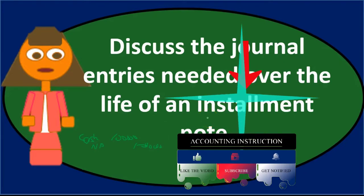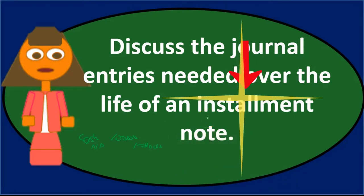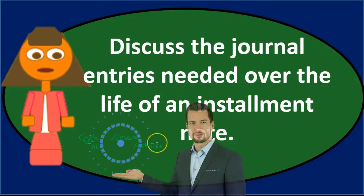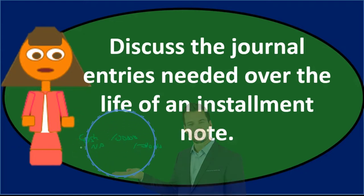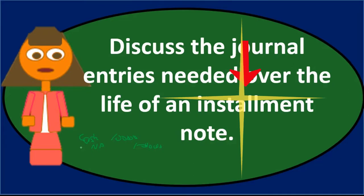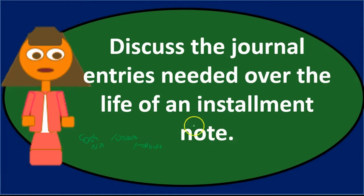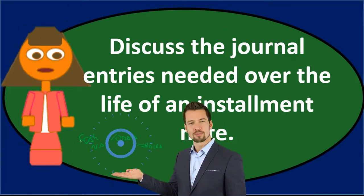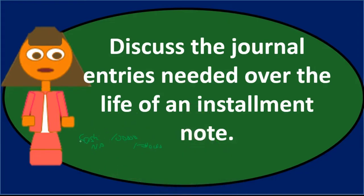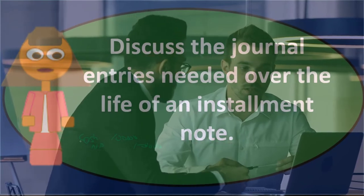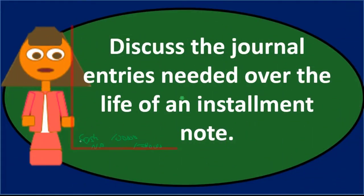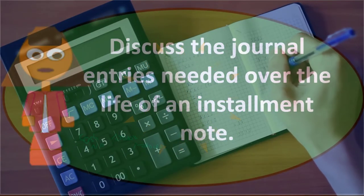Even if the term 'installment' throws us off, we can start here and say: I know what a note is, and this is the journal entry. What often messes people up is that the term 'installment' is confusing, and we start to overthink the role of interest, payments, and how many payments when we first record the note. None of that matters for just recording the note — we're simply recording that we got cash and owe money back in the future.